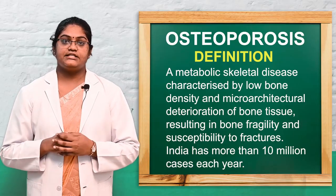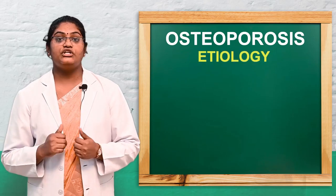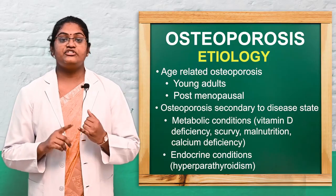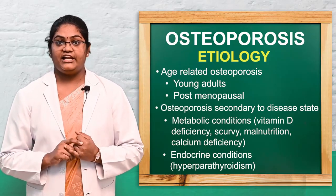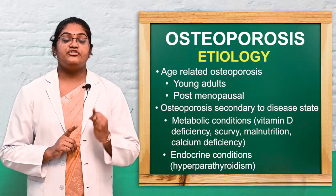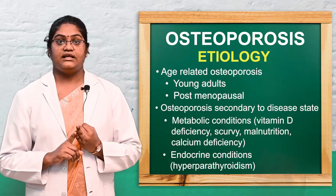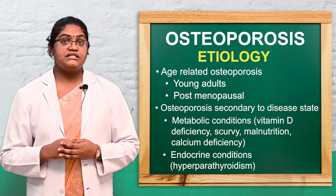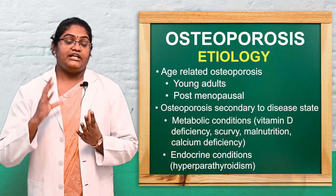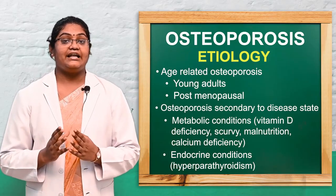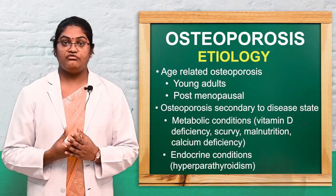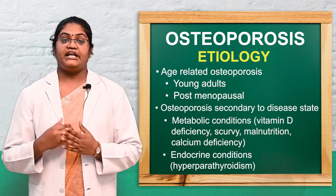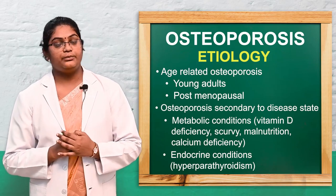Now we can discuss the main causes and etiology of osteoporosis. There are two main etiologies. The first one is idiopathic age-related osteoporosis, which mostly occurs in young adults and menopausal women. The second one is osteoporosis as a secondary disease state.